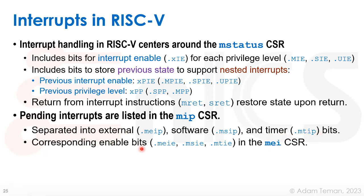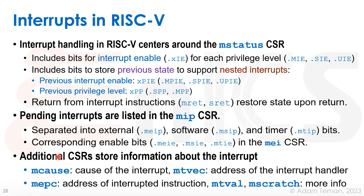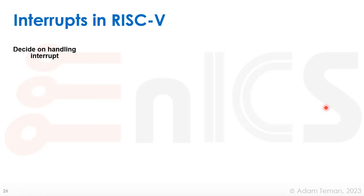In mip, meip stores pending external interrupts, sip stores pending software interrupts, and tip stores pending timer interrupts. Corresponding enable bits are in the mie CSR. Other CSRs store additional interrupt information: mcause encodes the cause of the interrupt, mtvec holds the address of the interrupt handler, mepc holds the address of the interrupted instruction so we can return to it, and mtval and mscratch store additional information depending on the implementation.